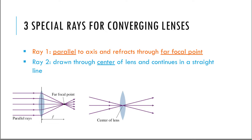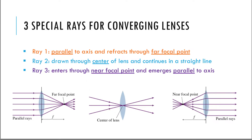The second ray is going to be drawn through the center and continues in a straight line — this is the easiest one to draw. If the ray is going this way, it goes to the center and it's not going to get bent; it's hitting the lens at the exact correct position so that it doesn't get bent. The third ray is going to go through the near focal point and then, as soon as it hits that lens, it's going to emerge parallel.